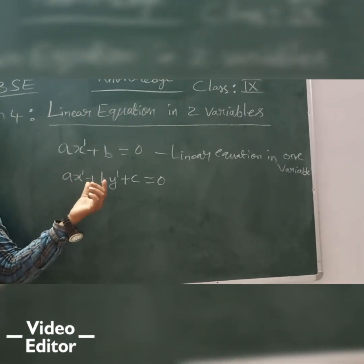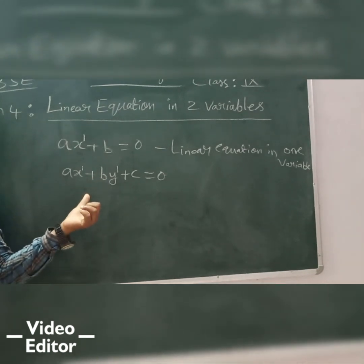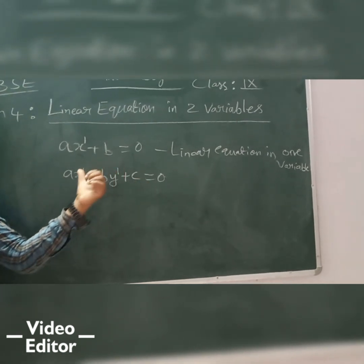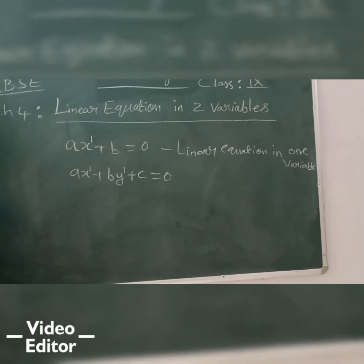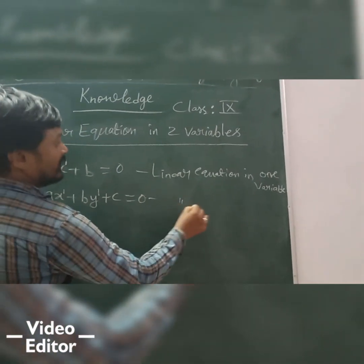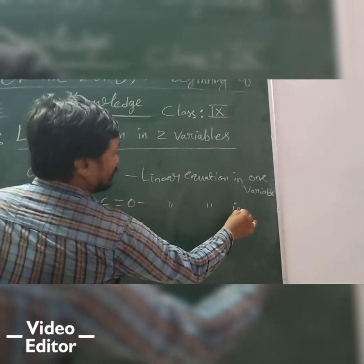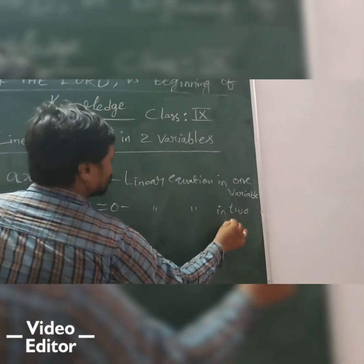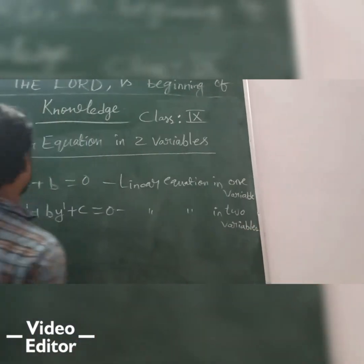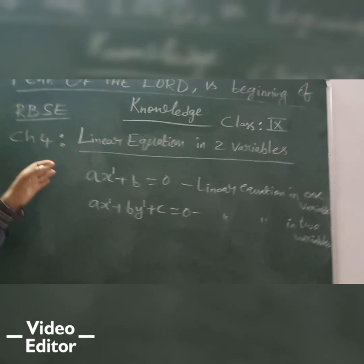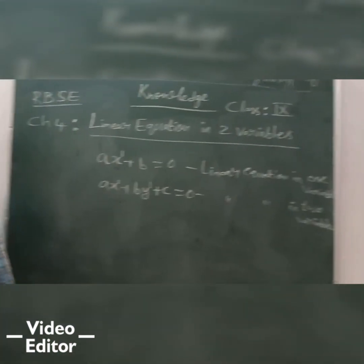So, exponent is 1. So, it becomes linear. And equal is there, so it's a linear equation. And then, how many variables? Two. Linear equation in two variables.